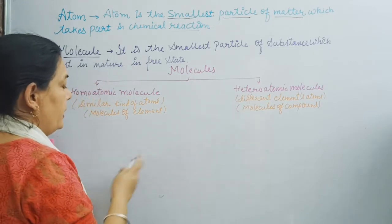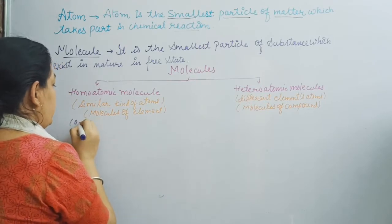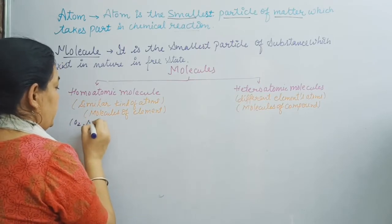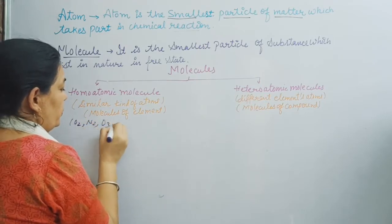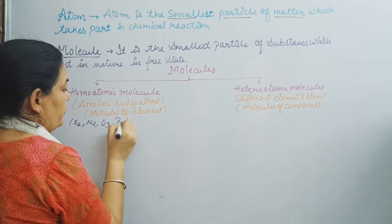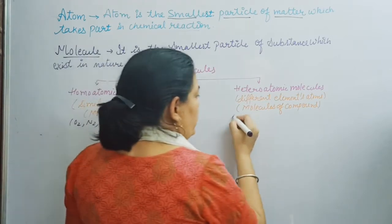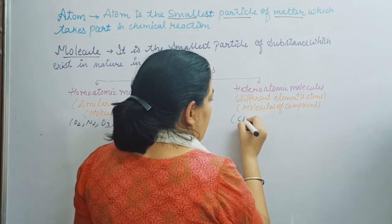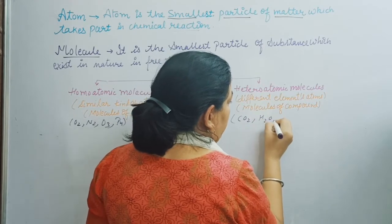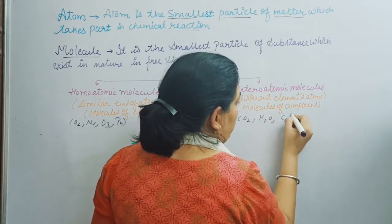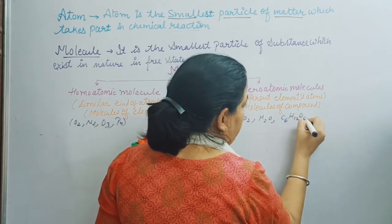Let us discuss some examples. Homoatomic molecule examples: oxygen (O2), nitrogen (N2), ozone (O3), and phosphorus (P4). Heteroatomic molecule examples: carbon dioxide (CO2), water (H2O), and glucose (C6H12O6), etc.